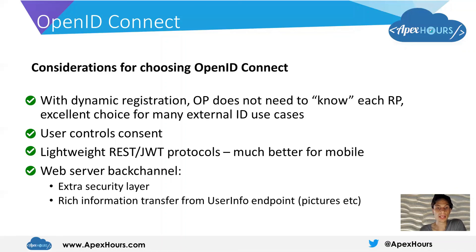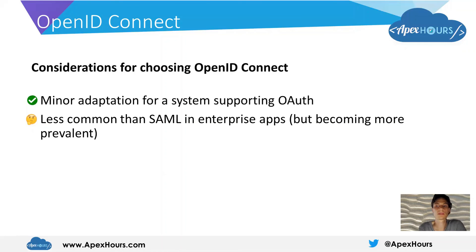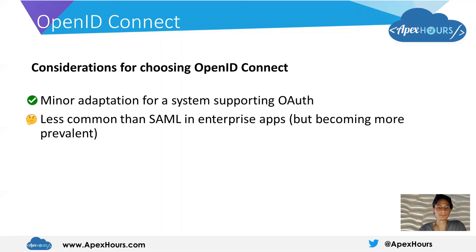In a typical web server implementation with a back channel in place and out-of-band requests being sent to the OpenID Connect provider, there's an extra level of security in not sending sensitive information across the browser, and it allows for richer information transfer and larger files without contributing to browser traffic. Because it's built on top of OAuth, any system which already supports OAuth is halfway there in terms of supporting OpenID Connect - it's often just a straightforward extension. Finally, as a newer protocol than SAML, it's not nearly as prevalent, but it is becoming a lot more common even in enterprise applications.